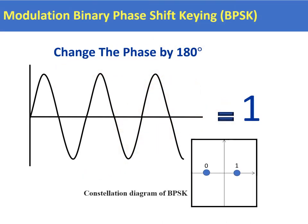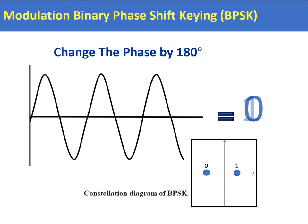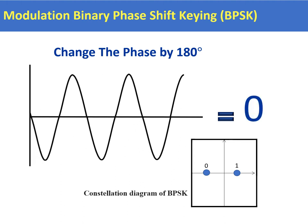First of all, let's start with modulation using Binary Phase Shift Keying, or BPSK for short. It's a very simple scheme used for modulating the RF carrier — we simply modify the carrier by 180 degrees, shifting the phase by 180 degrees. The carrier will be representing a 1, but if we shift the phase by 180 degrees we can make it represent a 0. This is also displayed on the constellation diagram here for BPSK.